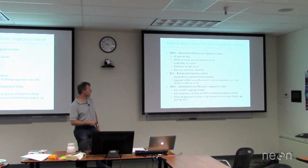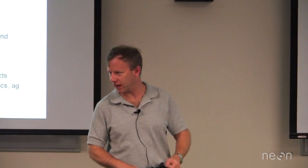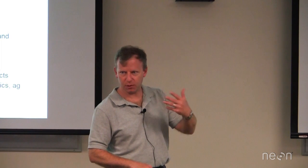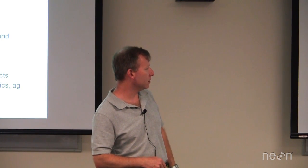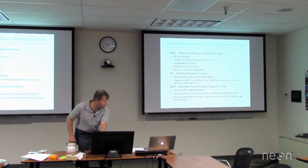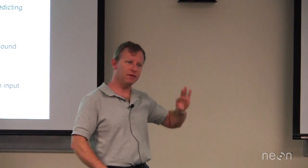Atmospherically Resistant Vegetation Index is another one designed to use the blue channel. As you get down into the shorter wavelengths in the blue, you start to see more atmospheric effect. Using that to account for what the atmosphere might be doing to your data allows you to get a better index. This is particularly good in high aerosol content — think of hazy stuff. If you fly down to Florida in the summer and look out, it looks like soup with all the humidity. Using that blue channel allows us to account for that better.